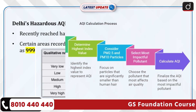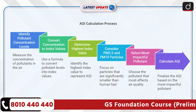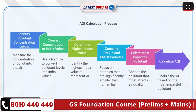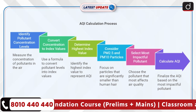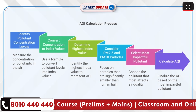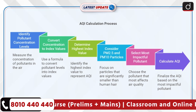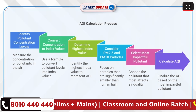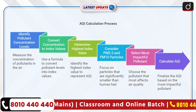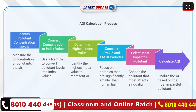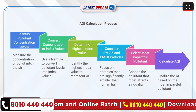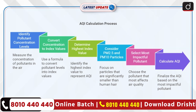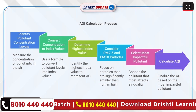Now let's discuss how AQI is calculated. Pollutant concentration levels are converted into index values through a formula, with the highest value representing the AQI. PM2.5 and PM10 particles are the primary pollutants, measuring up to 30 times smaller than a human hair. The AQI calculation considers the most impactful pollutant to determine air quality.